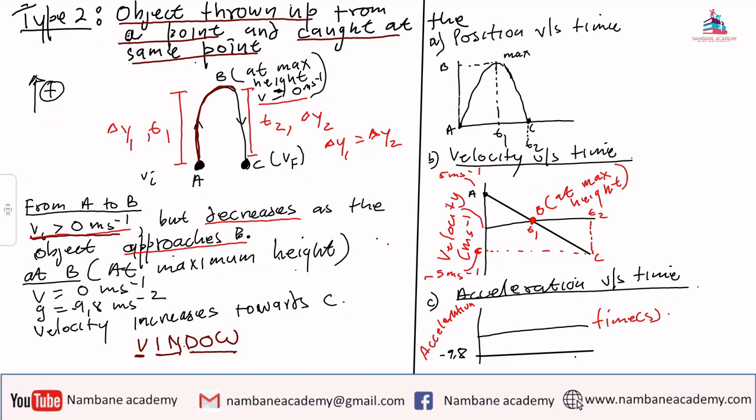Which is greater than zero. But now this decreases as the object approaches B. Remember, it must now change direction; it must come down. So it was going up, reaching the maximum height, then changing direction. It must somehow have stopped in order for it to change direction. That is the reason why we say...